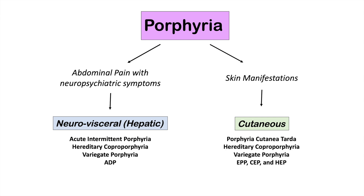There's another class of porphyria conditions with skin manifestations, called cutaneous porphyria conditions. In the cutaneous class, we have porphyria cutanea tarda, hereditary coproporphyria, variegate porphyria, EPP, CEP, and HEP. You can notice there are some types of porphyria common between both classes, but what I really want to focus on in this lesson is acute intermittent porphyria.